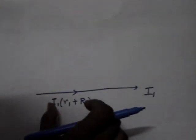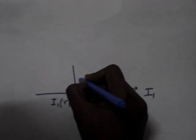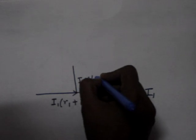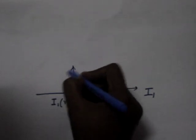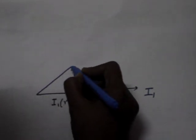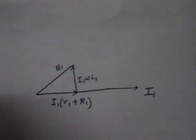This is the resistive drop, then we have inductive drop for L1, I1 omega L1. Now the resultant is E1.